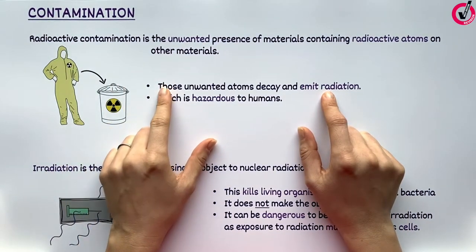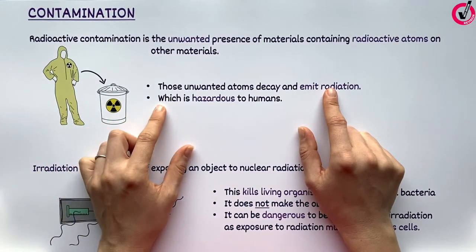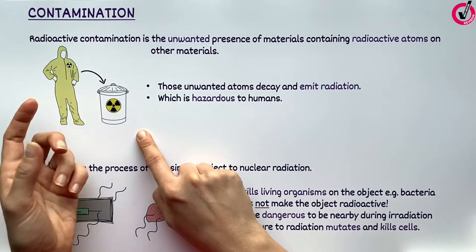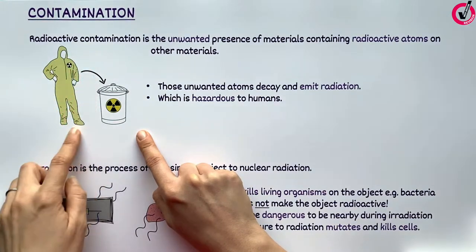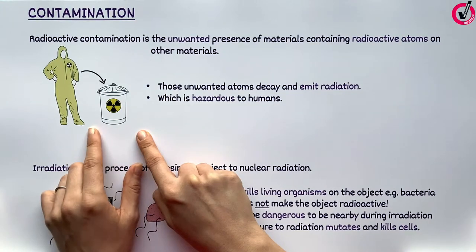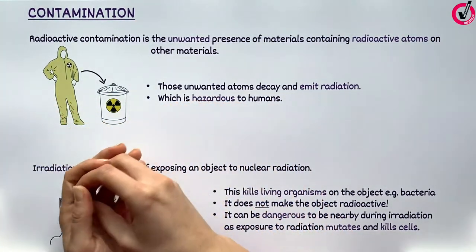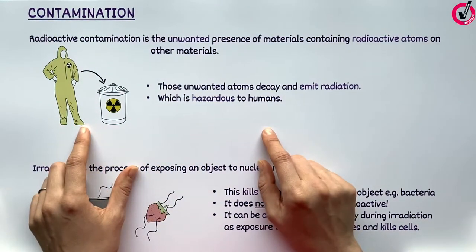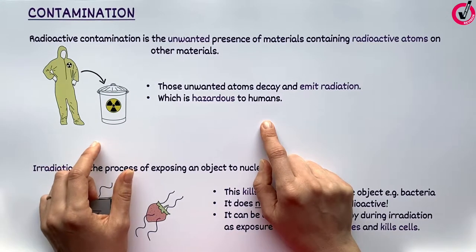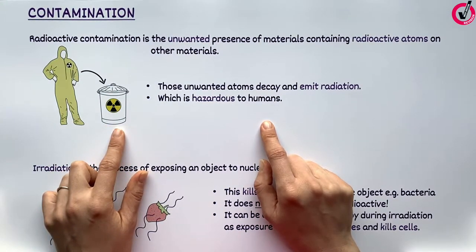Radioactive contamination is when there is unwanted radioactive material on another material. For example, if a scientist has been handling radioactive substances, then some of this may have rubbed off onto their suit or clothes — we say the suit is contaminated. This is a problem because as long as the radioactive material is on the suit, the suit is dangerous. Radiation is hazardous to people as it mutates and even kills living cells, so contaminated materials have to be handled and disposed of carefully.